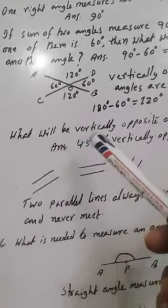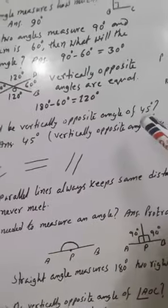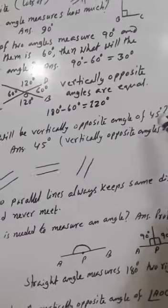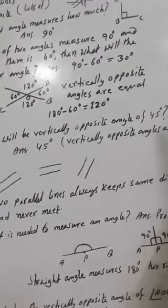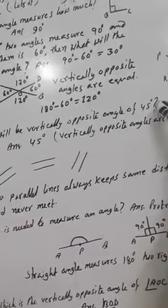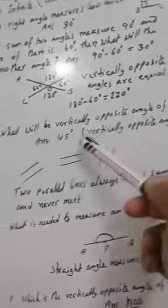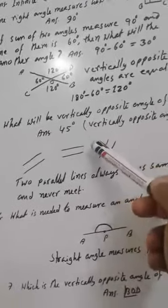What will be the vertically opposite angle of 45 degrees? Since vertically opposite angles are equal, if one angle is 45 degrees, the other one will also be 45 degrees.